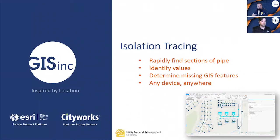So to summarize, the ArcGIS utility network allows us to access fast, reliable, and authoritative data on any device anywhere, and the ability to perform advanced analytics and functions such as the isolation trace you just showed us. What's interesting is you pointed out that running an isolation trace can help identify and determine if features are missing from the utility network model. That's exactly correct, Steve. It's a good preemptive approach to do validity checks on your data. We don't have to use it just during an emergency or when an actual leak occurs — you can use it before an event to ensure that your data integrity is where it needs to be to perform these isolation traces.